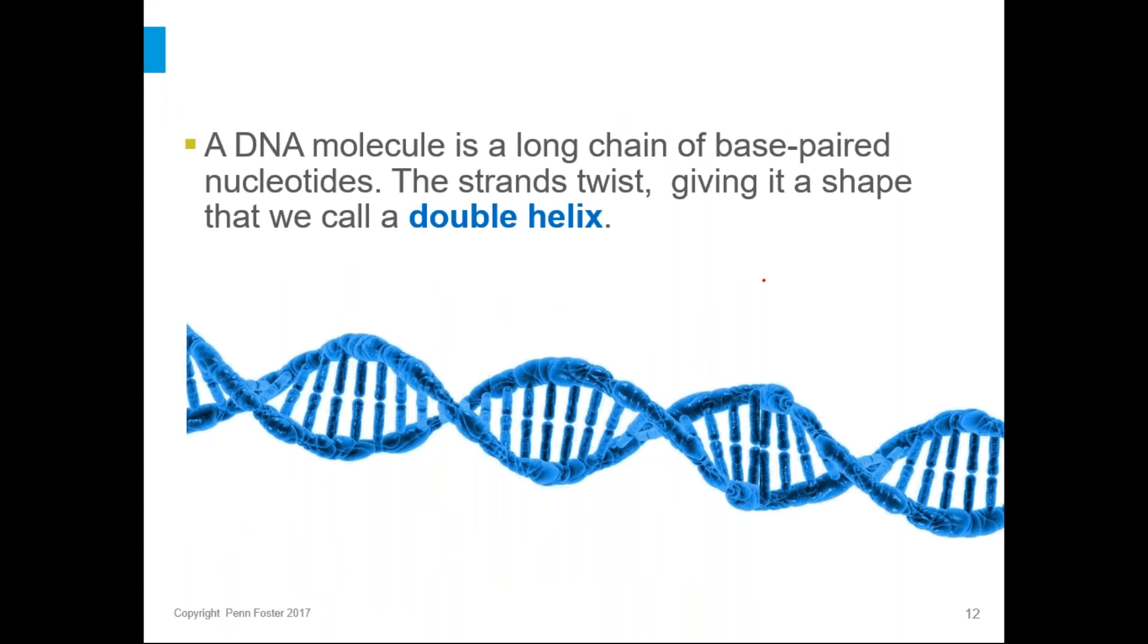And then once you have those two strands come together to make two complementary strands that are hooked together, they end up twisting. They do this naturally. It's just what happens as it gets built. And so you get this DNA that's in the shape of a double helix. So this is really the iconic shape of DNA. A helix is a twisted strand, and since you have two strands twisted together, you get a double helix.